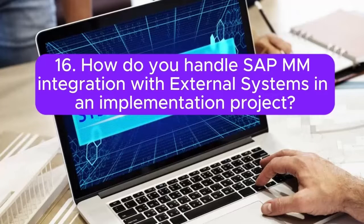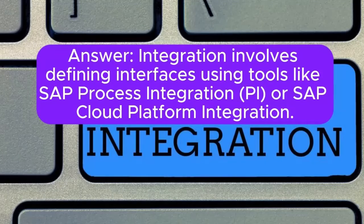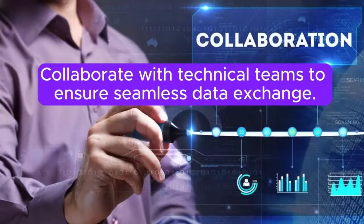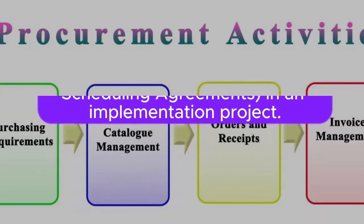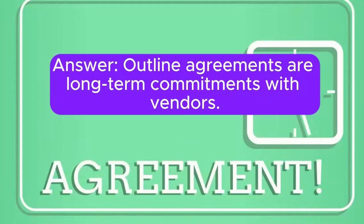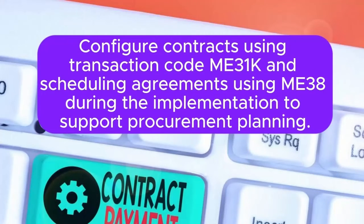Question 16: How do you handle SAP MM integration with external systems in an implementation project? Answer: Integration involves defining interfaces using tools like SAP Process Integration (PI) or SAP Cloud Platform Integration. Collaborate with technical teams to ensure seamless data exchange. Question 17: Explain the concept of SAP MM outline agreements — contracts and scheduling agreements — in an implementation project. Answer: Outline agreements are long-term commitments with vendors. Configure contracts using transaction code ME31K and scheduling agreements using ME38 during implementation to support procurement planning.